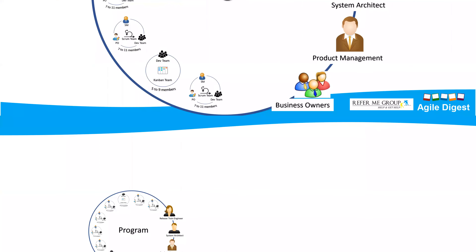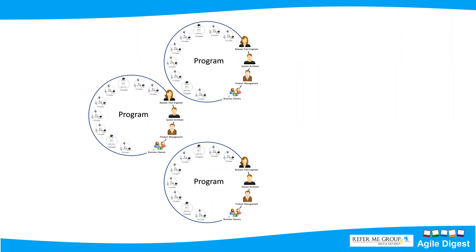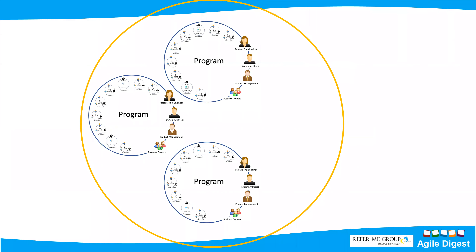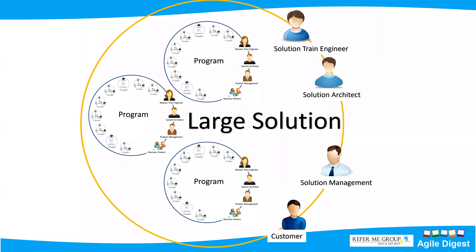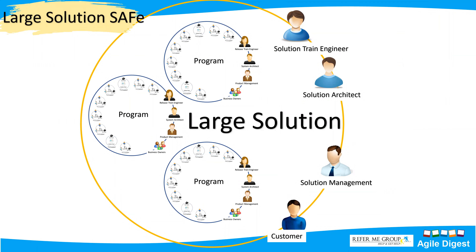All those combined make one program. Multiple teams can work on Kanban, some on Scrum, and all teams are governed by the Release Train Engineer, System Architect, Product Manager, and Business Owner. In the scaled agile framework, this structure is called Essential SAFe. If you are not having multiple teams making one program, you are not using SAFe. Now if we have multiple programs, in a large organization that's possible — we make them into one boundary called Large Solution, with roles like Solution Train Engineer, Solution Architect, Solution Management, and Customer.